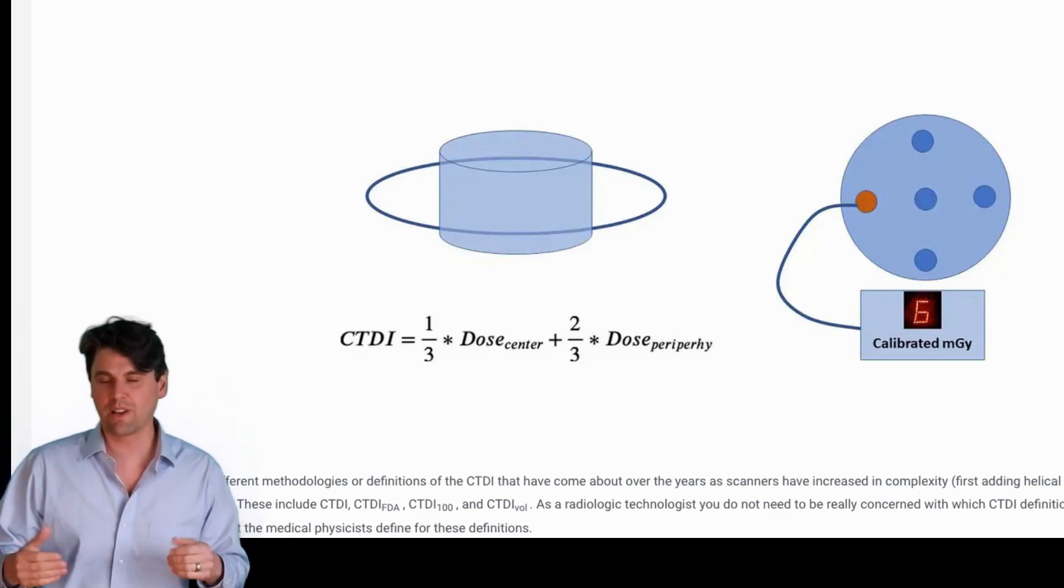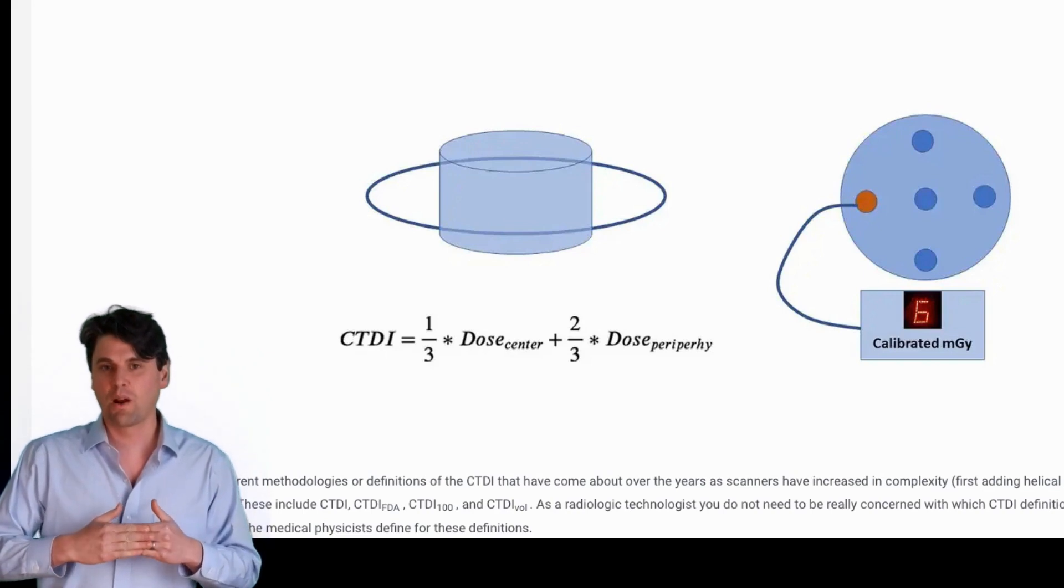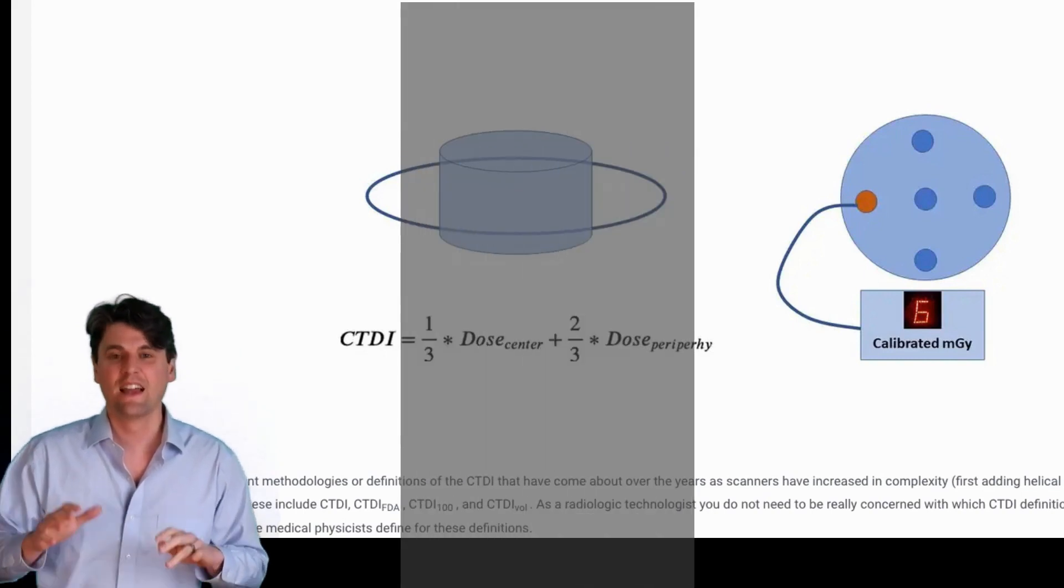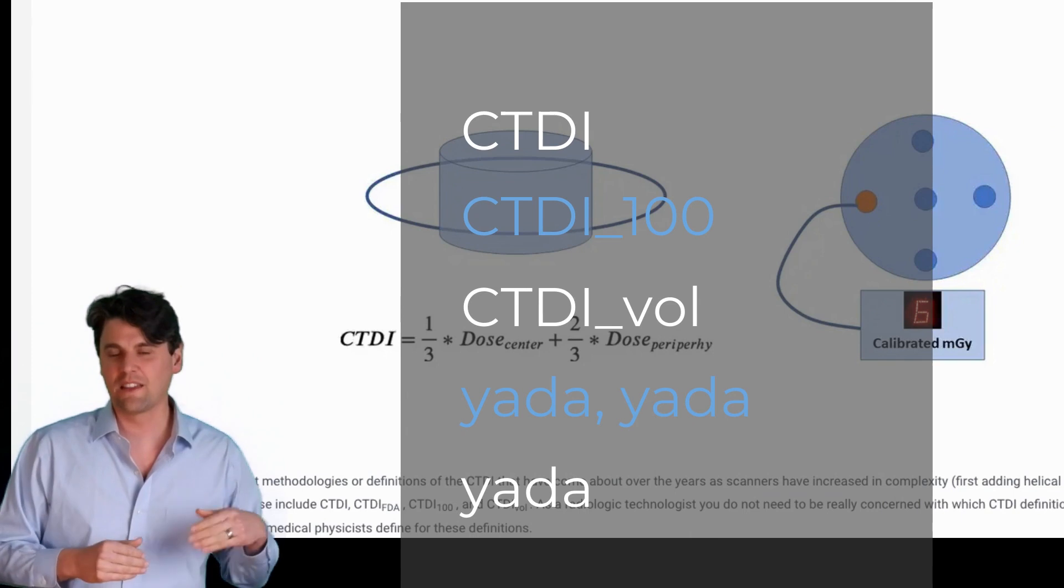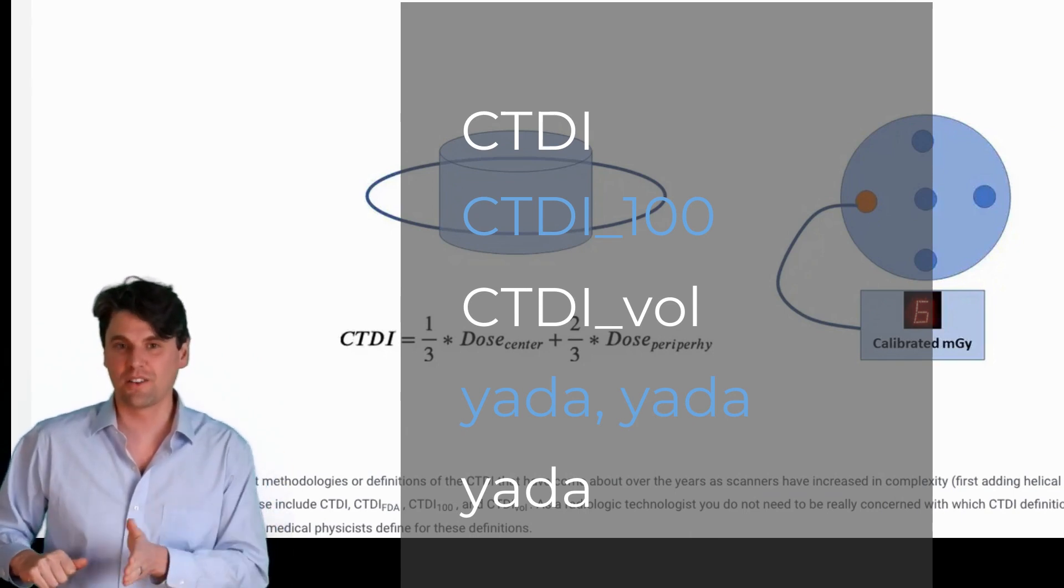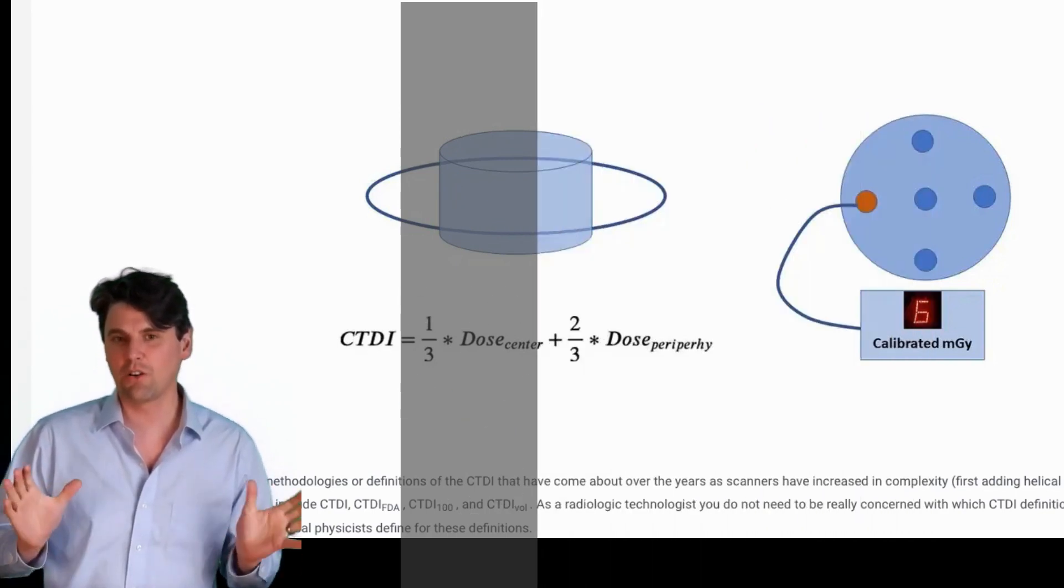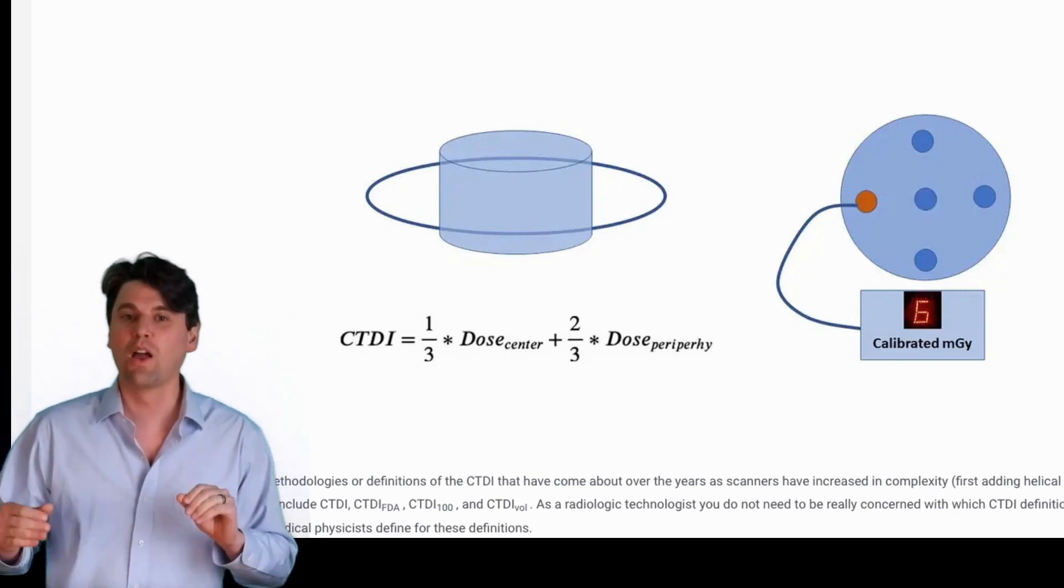The dosimetry gets a little bit more complicated on modern systems where we have a wider acquisition at one time, or what we call a cone beam CT. On those types of systems, the CTDI has changed over time from CTDI to CTDI 100 to CTDI vol. As a technologist, you generally don't have to worry about those details. The manufacturers will take that into account.